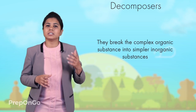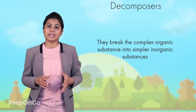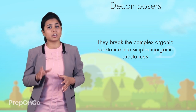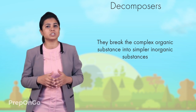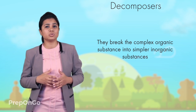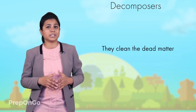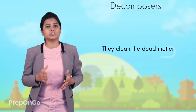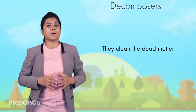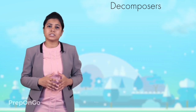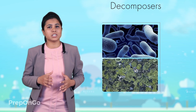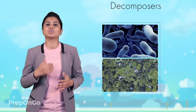The role of decomposers is to decompose the dead animals and plants. They break down complex organic substances into simpler inorganic substances which go into the soil and are once again used by the plants. They play a very important role in the ecosystem, as if they were not present, there would be no one to clean the dead matter and it would pile up. In the pond ecosystem, the bacteria and fungi are the decomposers.